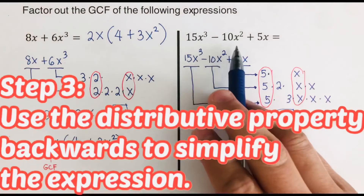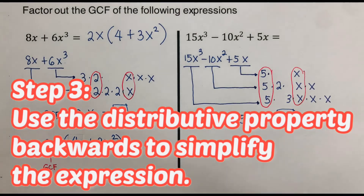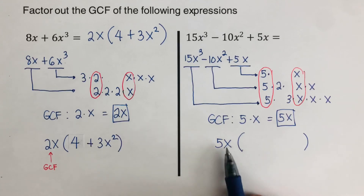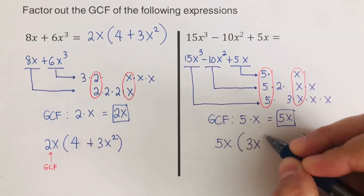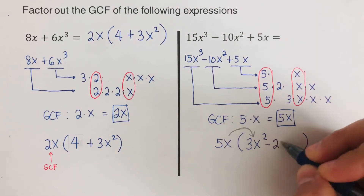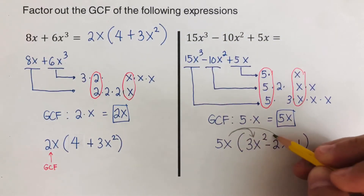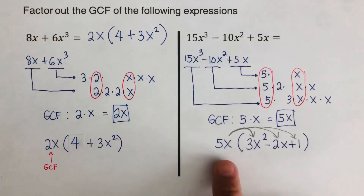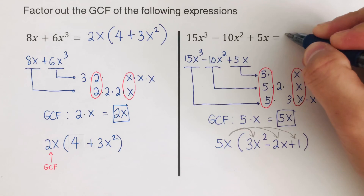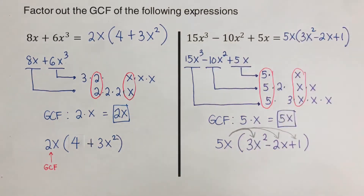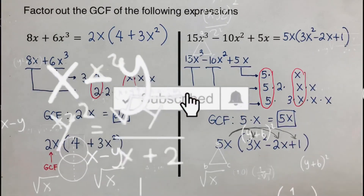Now step 3: use the distributive property backwards. We place 5x outside the parentheses and determine what goes inside. 15x cubed divided by 5x is 3x squared; 5x times negative 2x is negative 10x squared; and 5x times 1 is positive 5x. So the factored form is 5x times (3x squared minus 2x plus 1). If you find this video helpful, hit like and subscribe for more math videos. See ya!